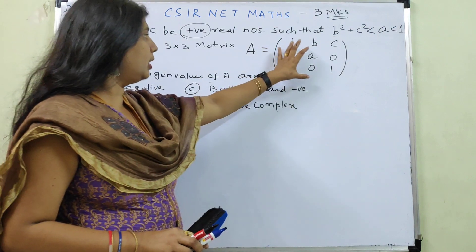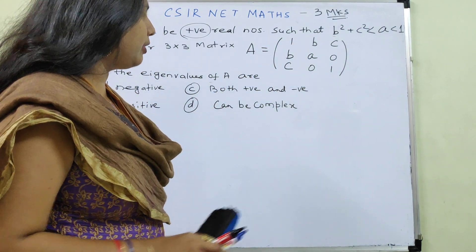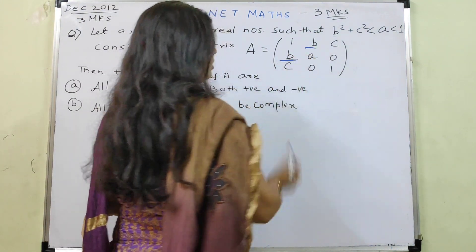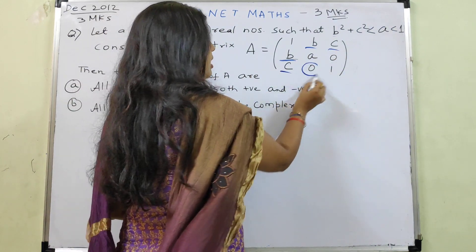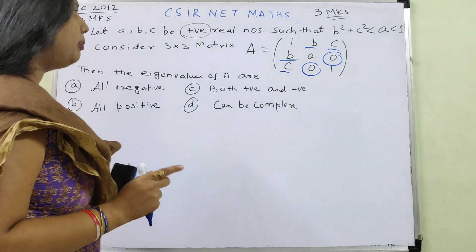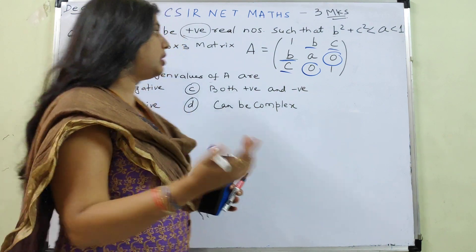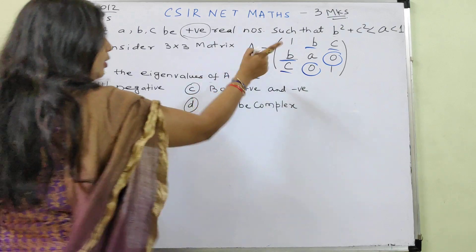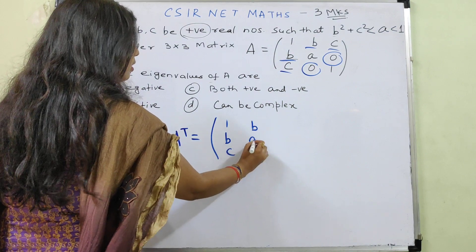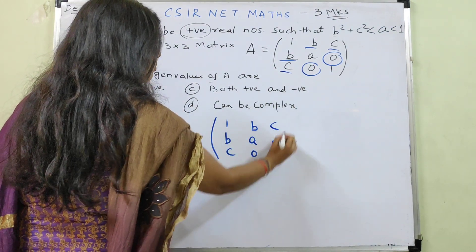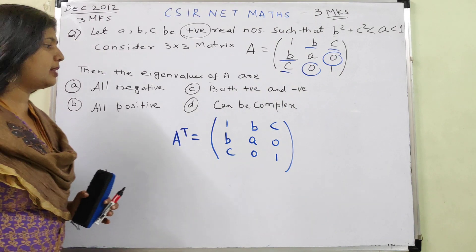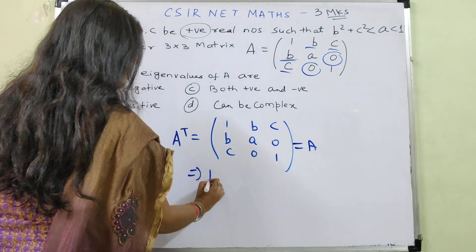Let's look at the matrix — can we see anything special? Yes, elements here and here are the same, this element is the same as this one, and this element matches this one. All entries are real. This is only possible when the matrix is a symmetric matrix. We can prove it: let's find A transpose. Row 1 written as column 1, row 2 as column 2, row 3 as column 3. Matching A transpose and A — yes, they are the same. So A is a symmetric matrix.